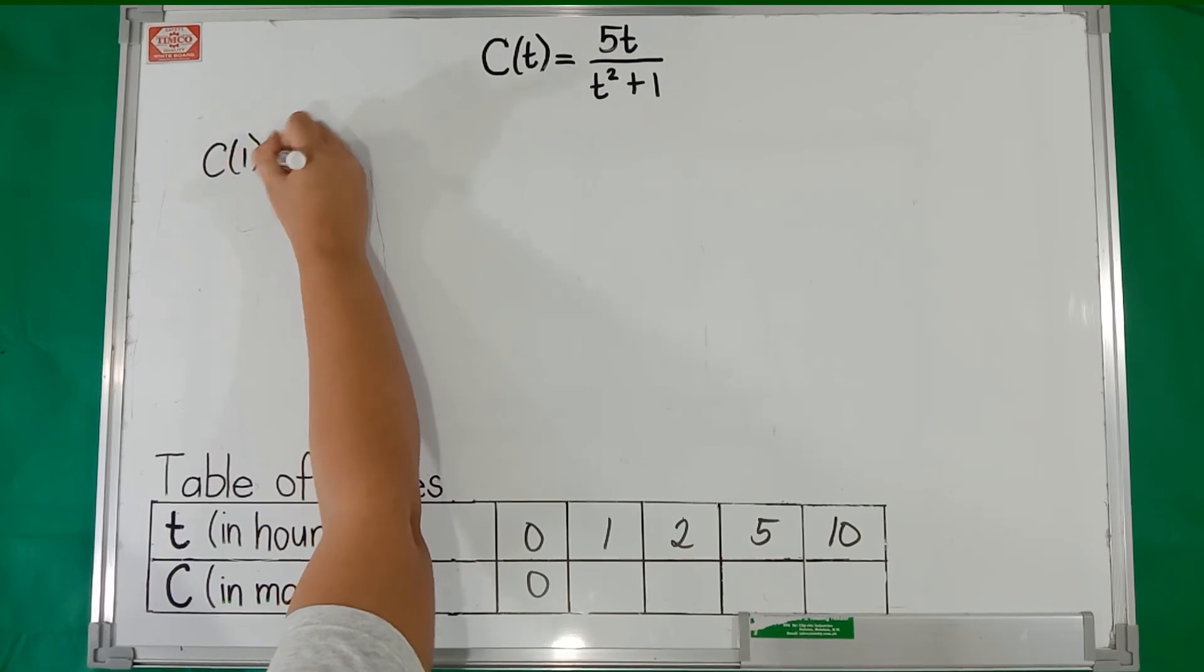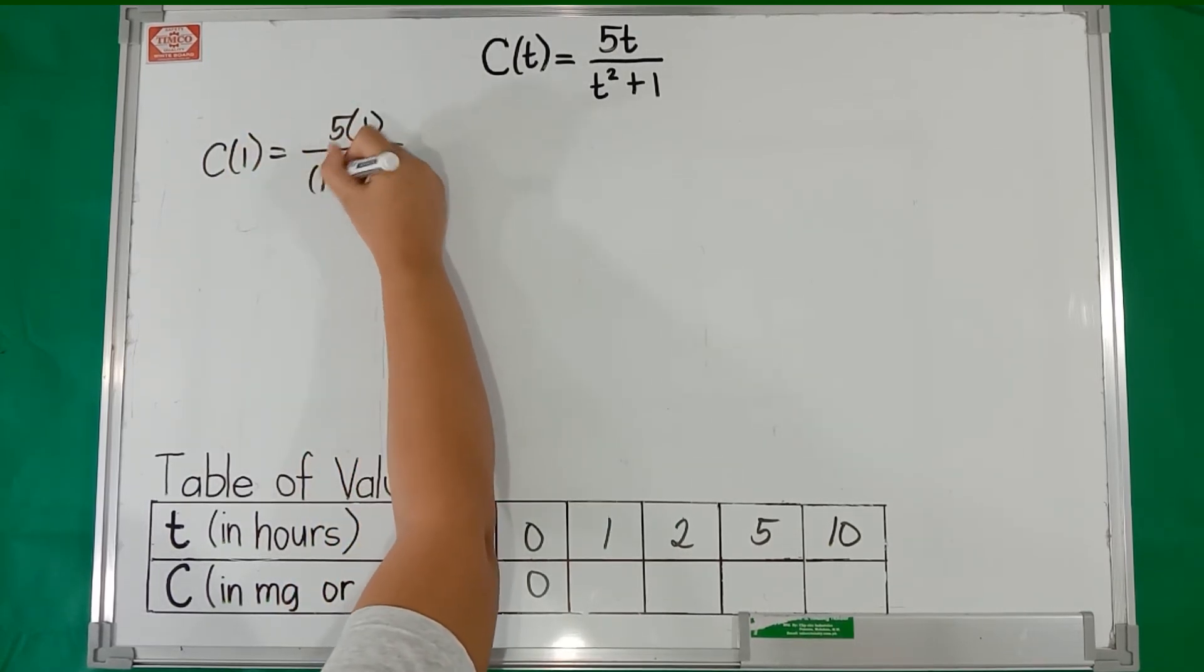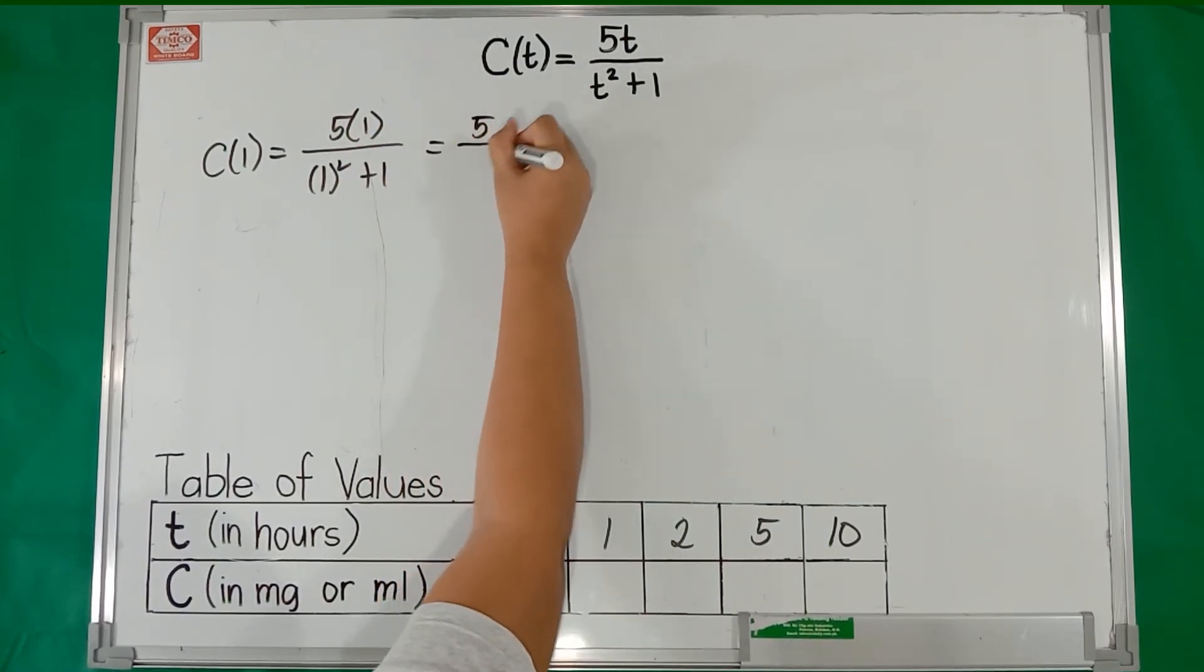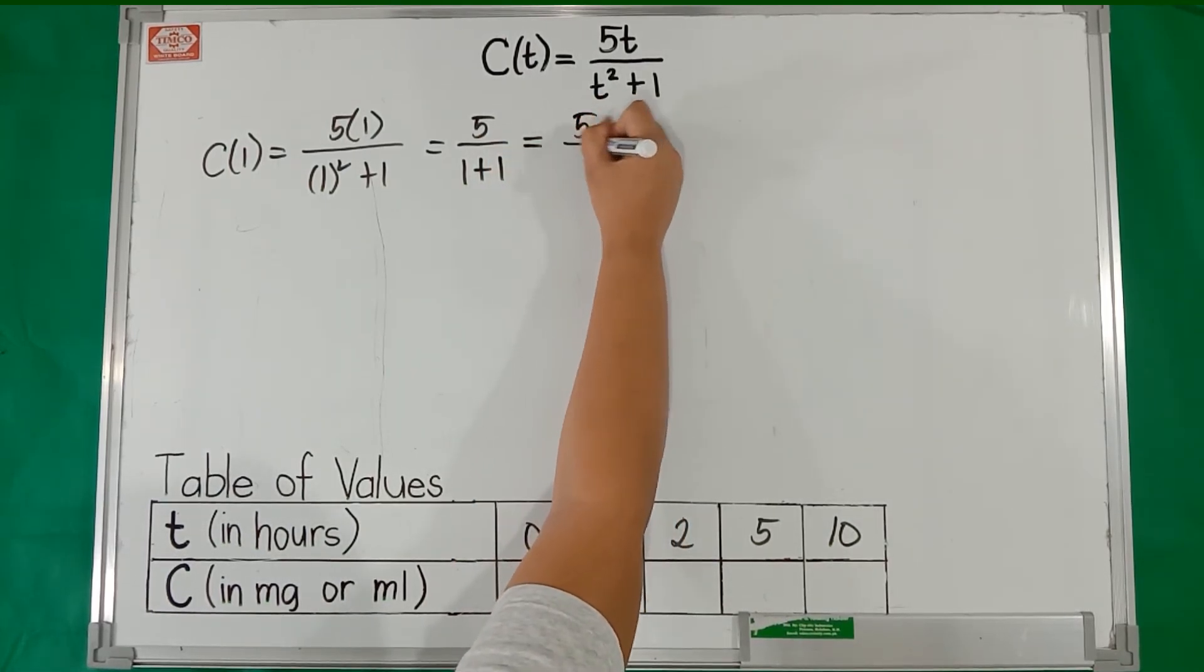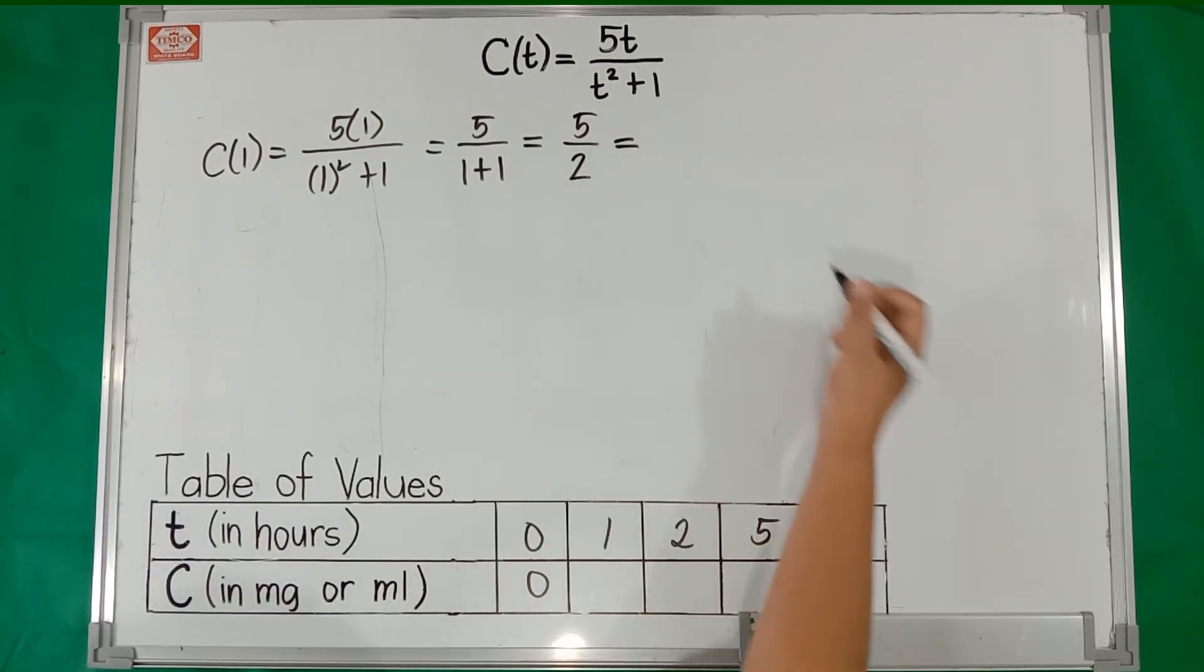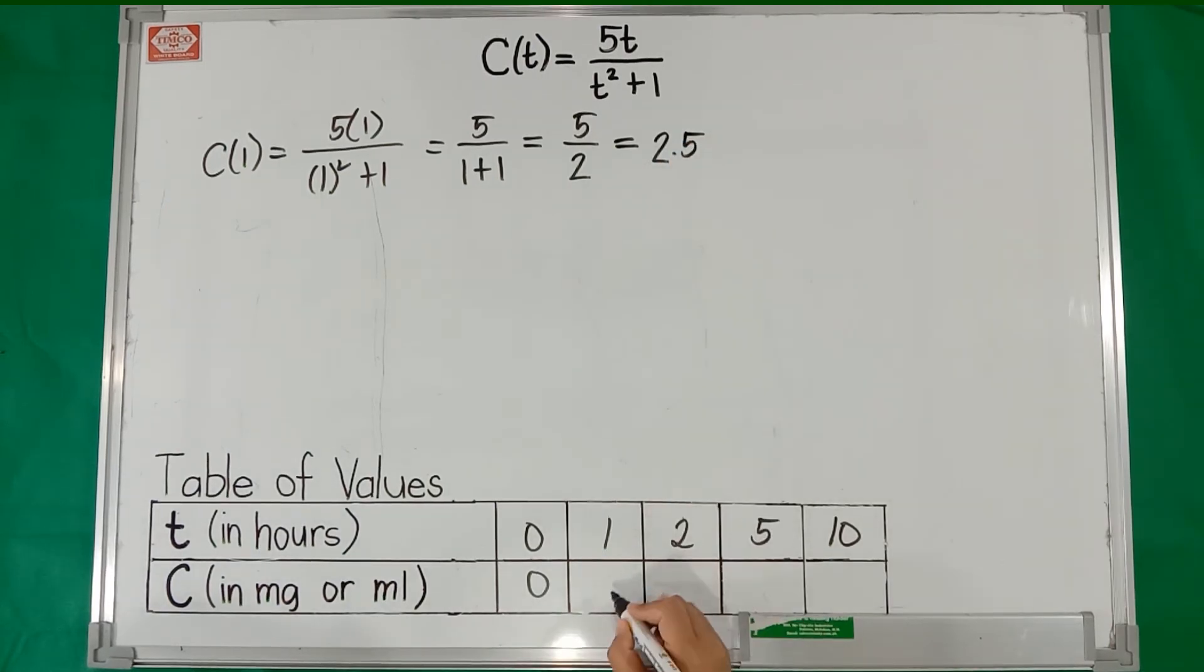So, c(1) = (5 × 1)/(1² + 1). 5 times 1 is 5. 1 squared is 1 plus 1. So, 5 over 1 plus 1 is 2. And 5 divided by 2 is 2.5. We can now enter the answer in the table of values.